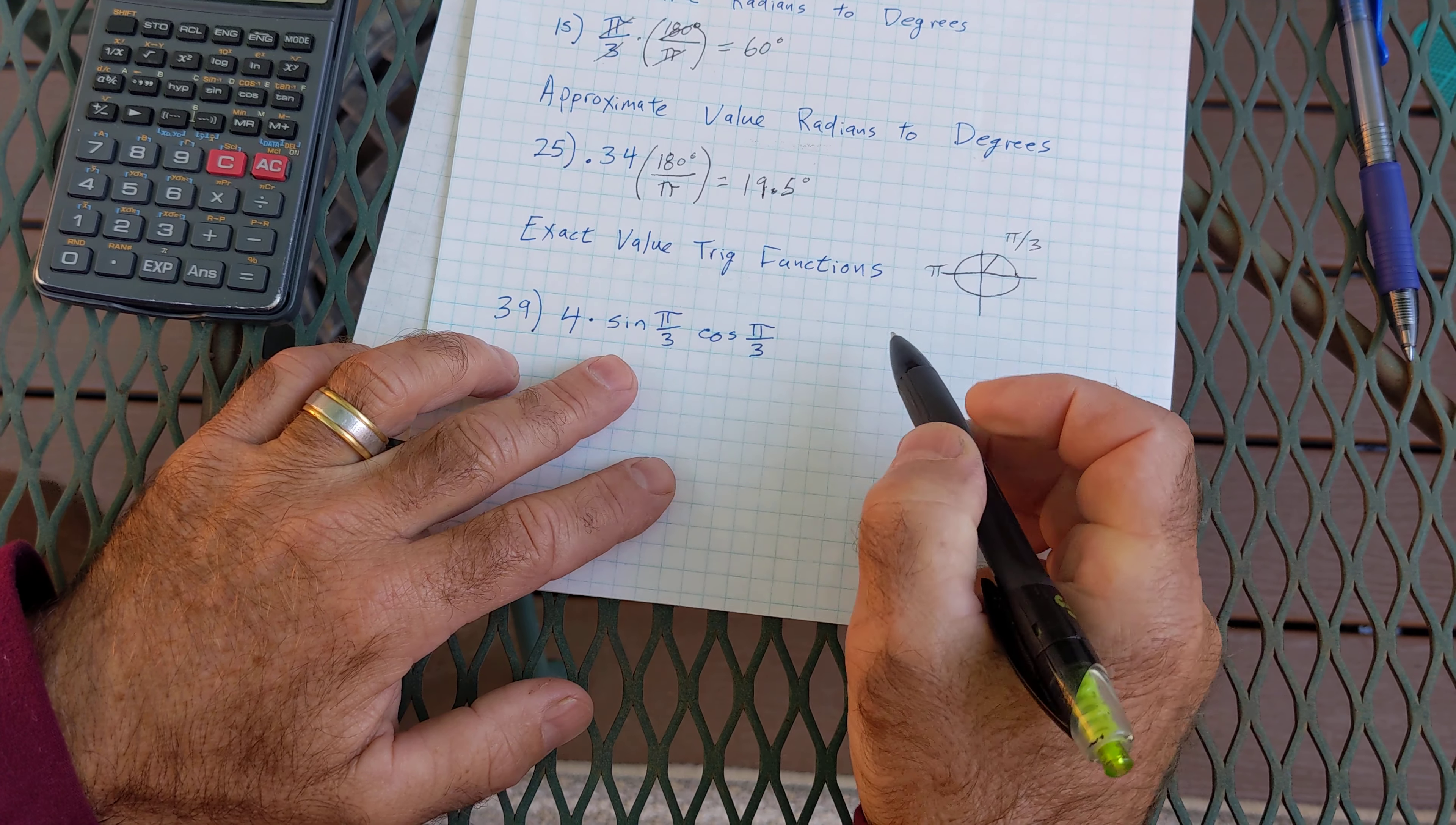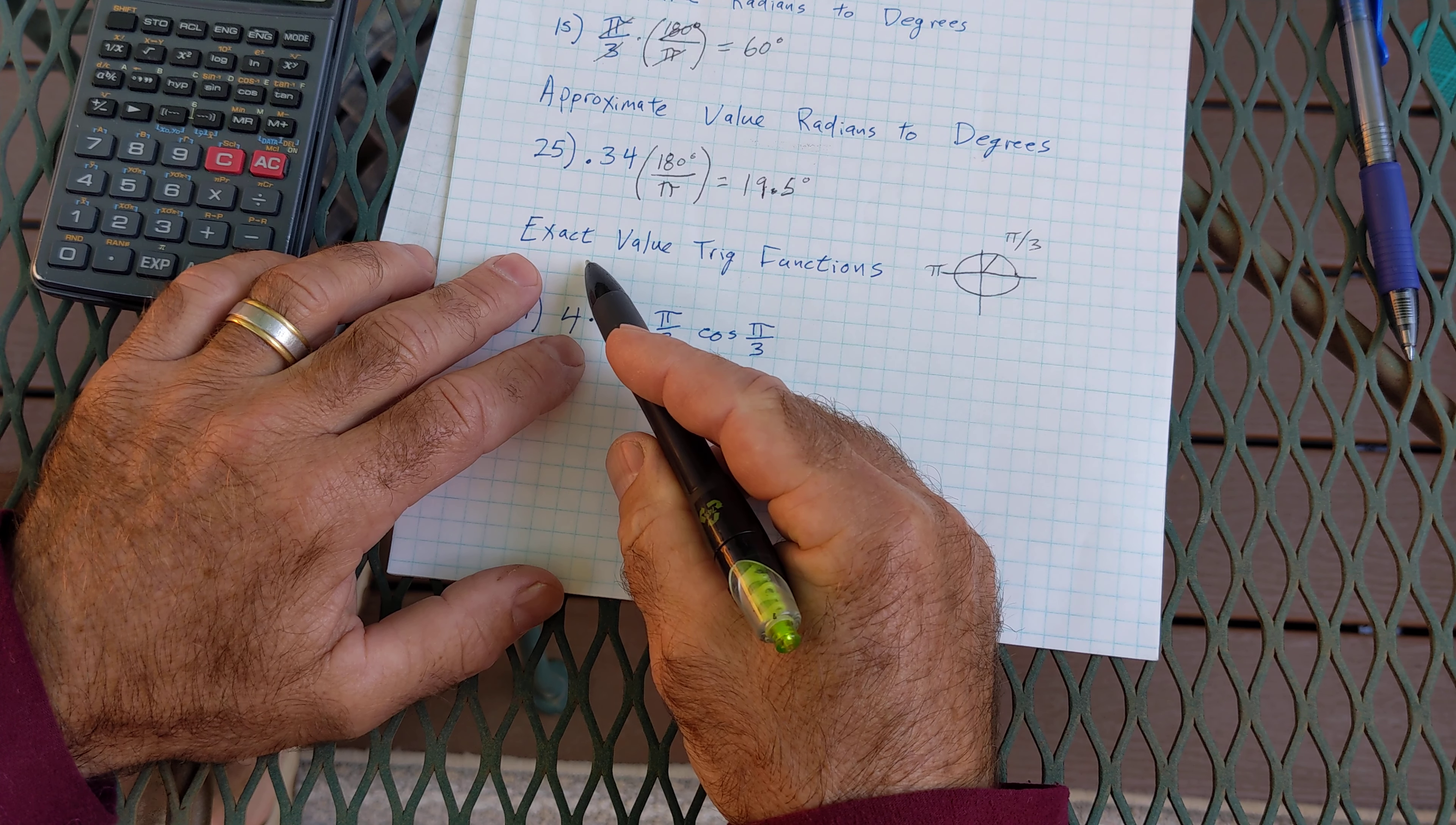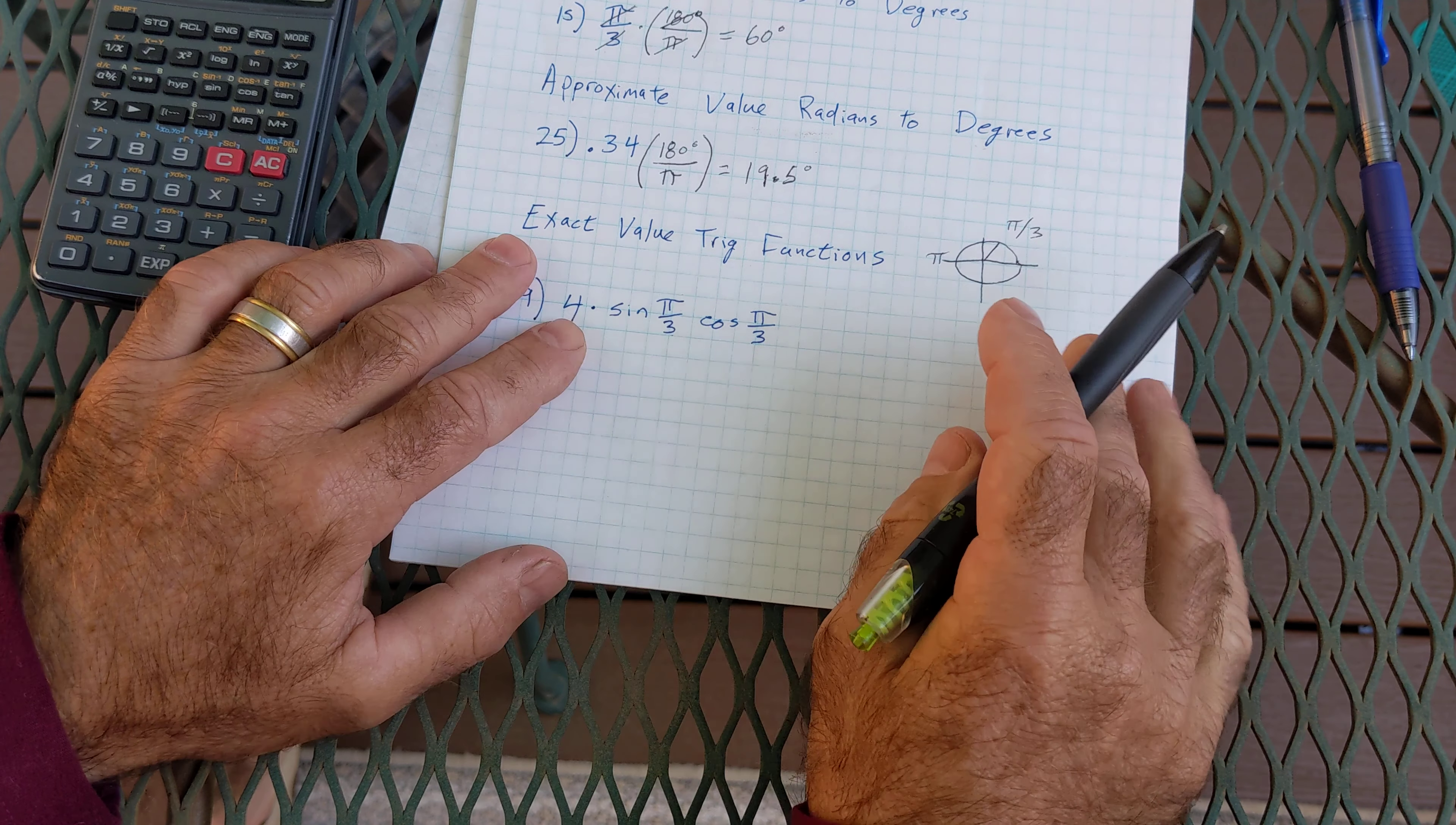And it's an exact value problem, so I know it has to be one of my three triangles. 30-60-90, isosceles right, or imaginary.